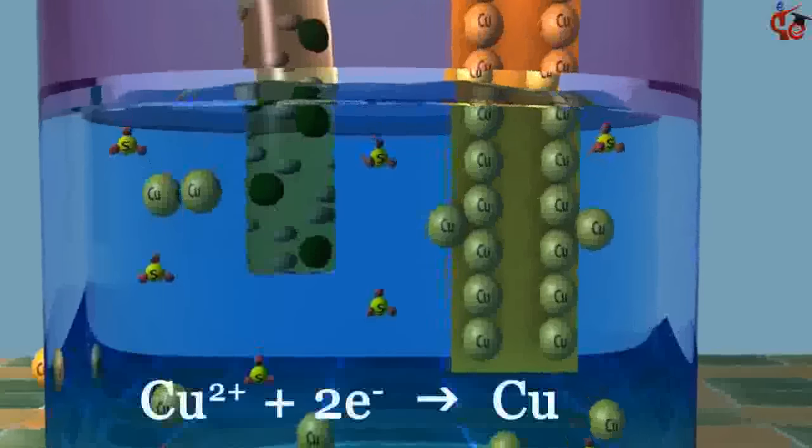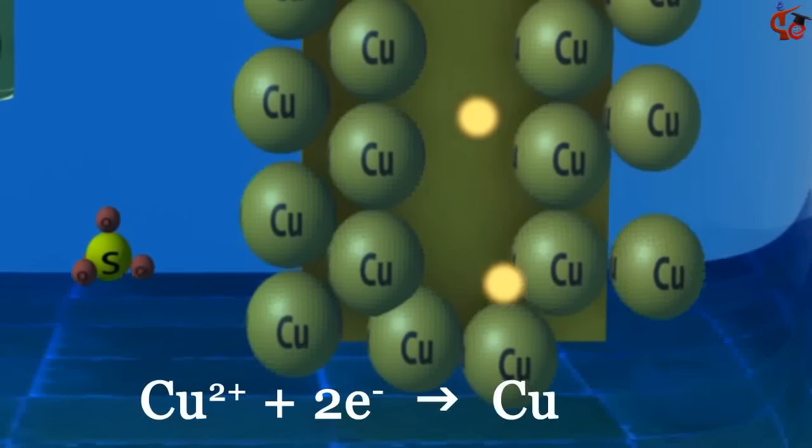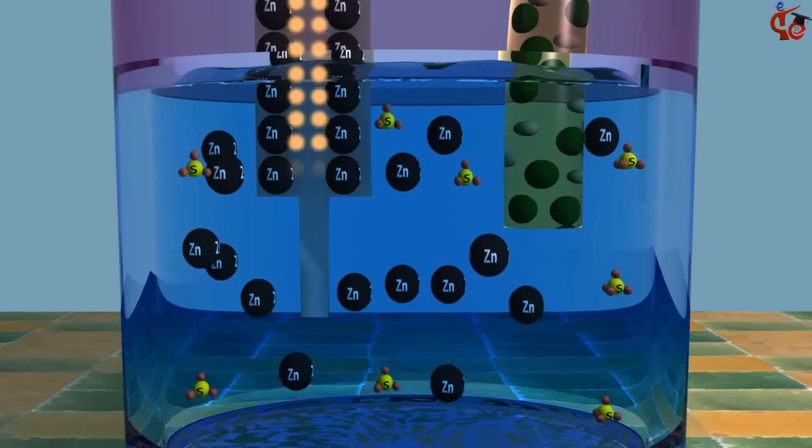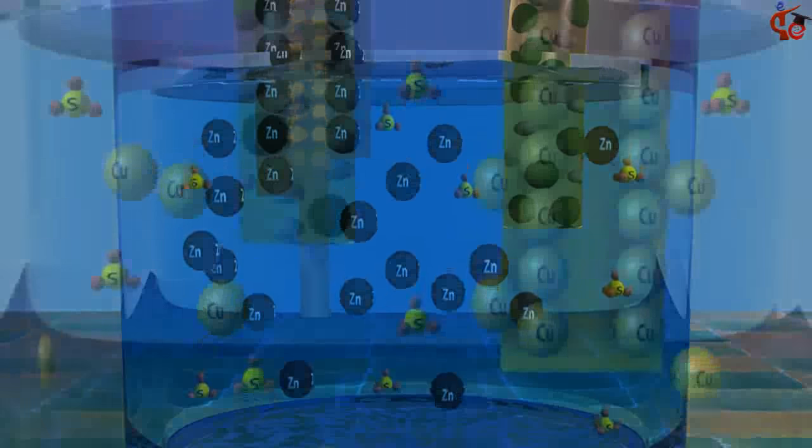The copper ions in solution gain two electrons and are reduced to copper metal. As the reaction continues, excess positive zinc ions build up in the zinc solution.